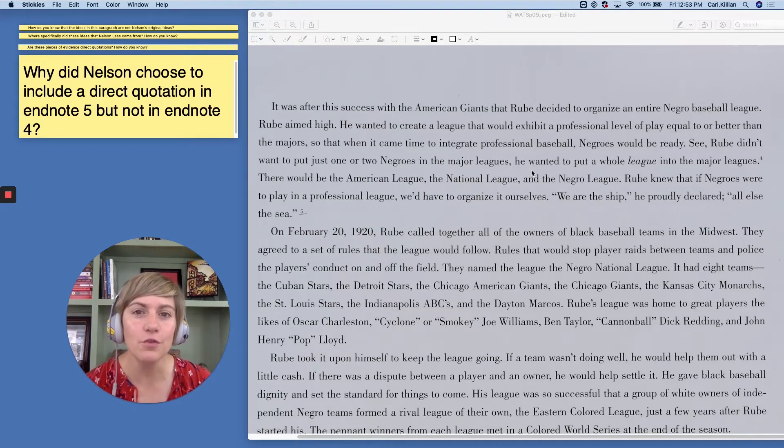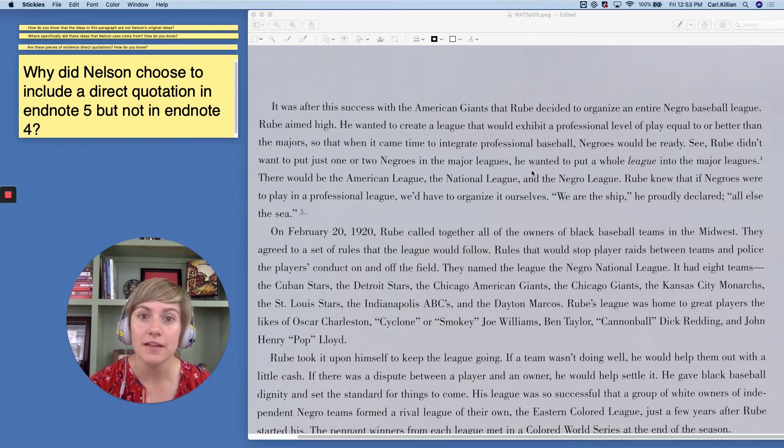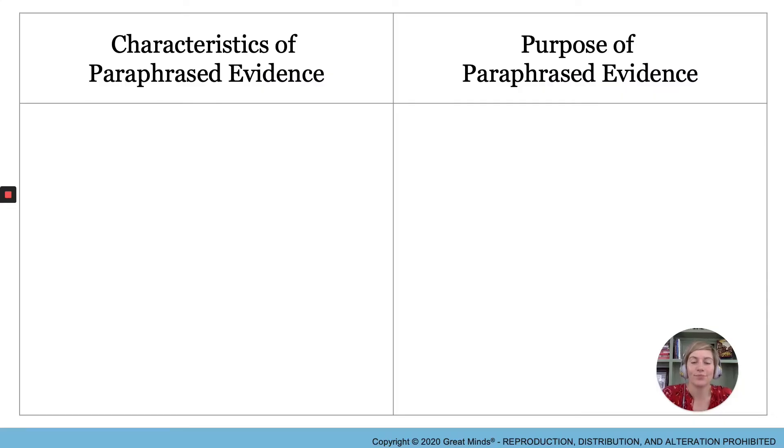So let's move on and we are now going to stamp the understanding of what a paraphrase is. So we are beginning with paraphrased evidence. On the screen is a two column chart with the titles, characteristics of paraphrased evidence and purpose of paraphrase evidence. Copy this chart into a clean page in your journal. We're going to add to each of these columns. Pause the screen and create that chart now.